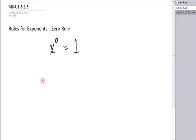What if I had the expression x to the fifth over x to the fifth? Well, if you use the quotient rule, you would say that's x to the five minus five, which is x to the zero.